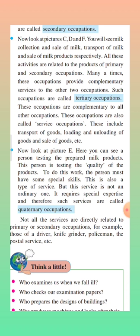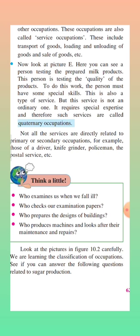Such services which require special skills are called quaternary occupations. Not all services are directly related to primary and secondary occupations. For example, a driver, knife grinder (someone who sharpens knives and scissors), policeman, and postal services — these services are not related to primary and secondary occupation because they are not dependent on nature.